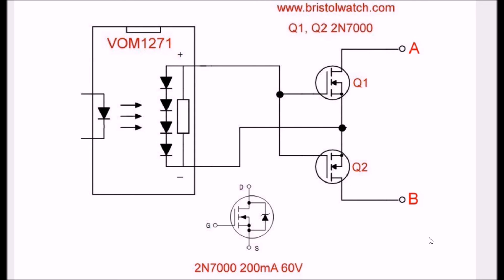Alright, here's the VOM-1271 again connected to two MOSFETs, a 2N7000, they're rated at 200 milliamps at 60 volts. Both gates are tied together and go to positive. Both source connections are tied together and go to the negative. And the output is taken from A to B, it's from drain to drain.